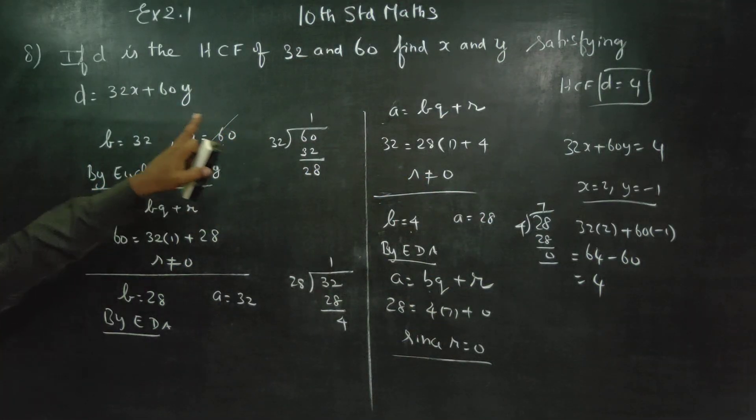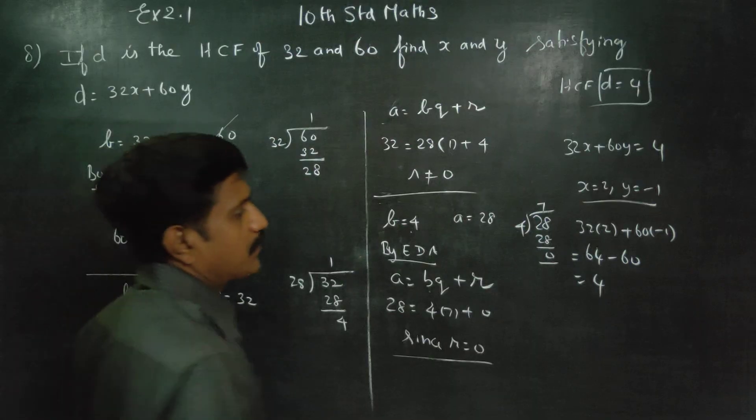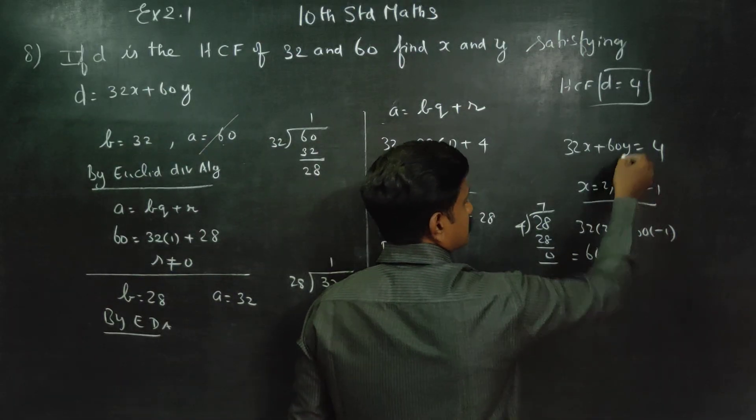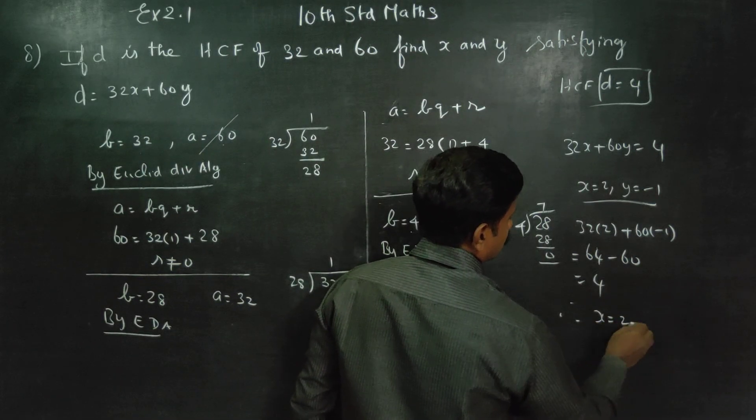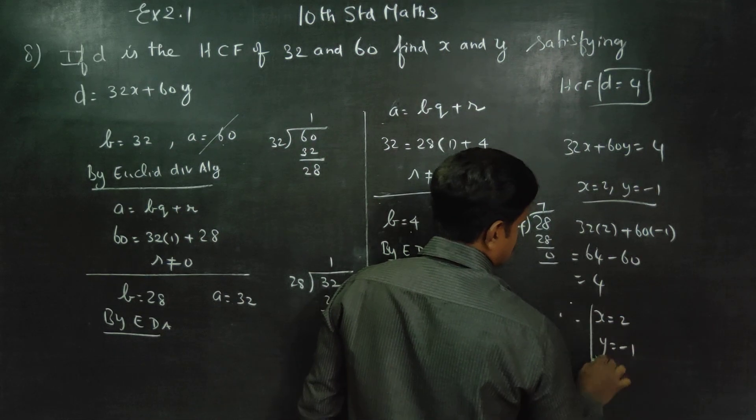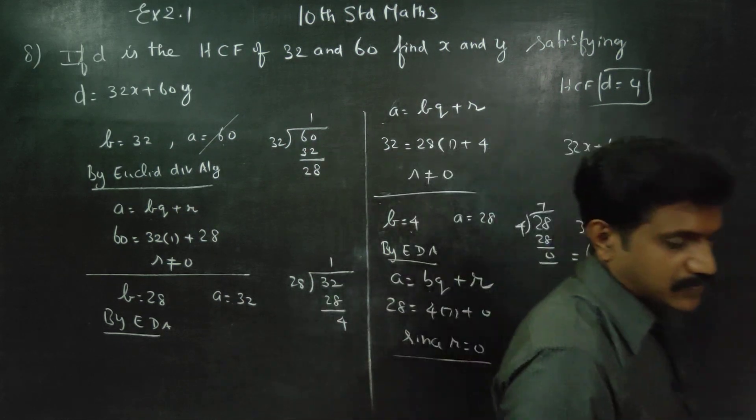To find x and y satisfying the equation, x would have value 2, y would have value minus 1. This is the end of this sum. Thank you.